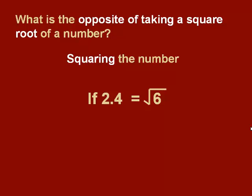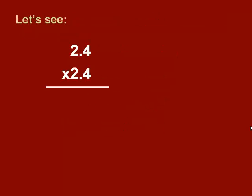So in this case, if 2.4 is the square root of 6, that would mean 2.4 squared should give us 6. Let's see if this is correct.